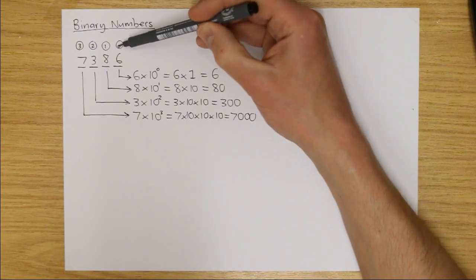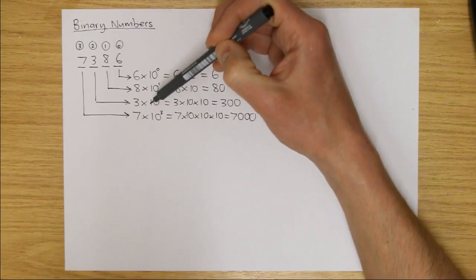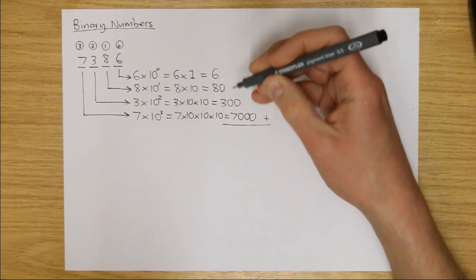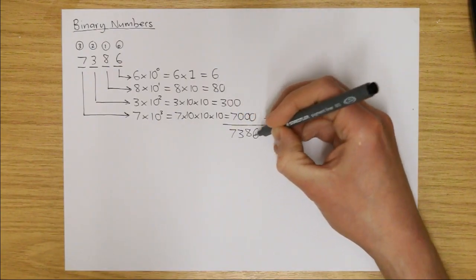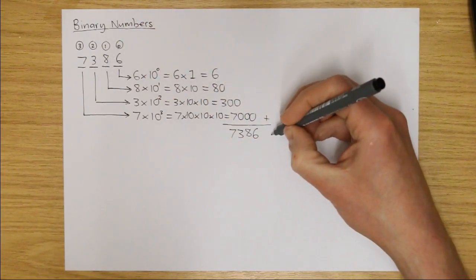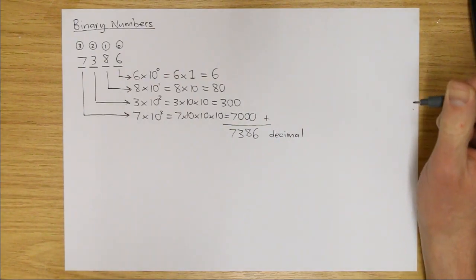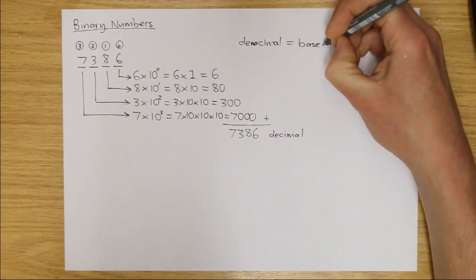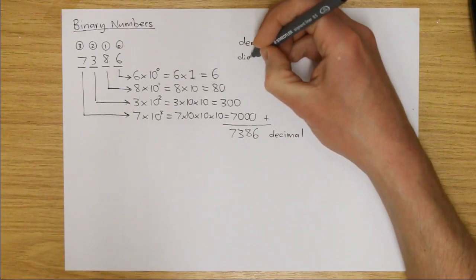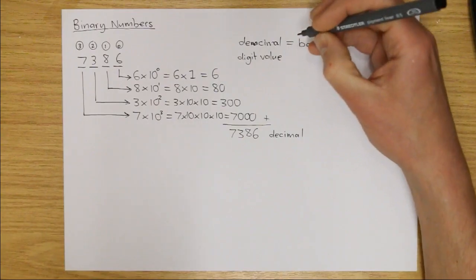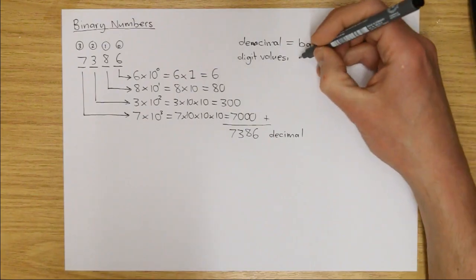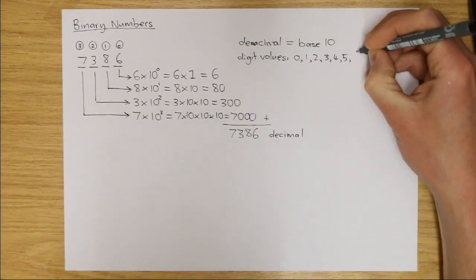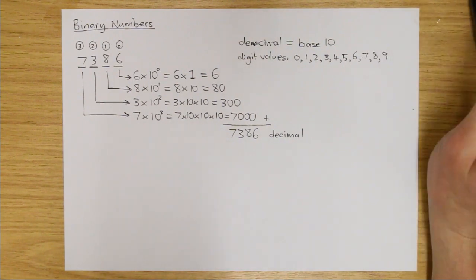Each of our digits represents a multiple of a different power of 10: digit zero is the multiple of 10 to the power of zero, digit one is the multiple of 10 to the power of one, and so on. If I add up the contributions — 7000 plus 300 plus 80 plus 6 — that gives us 7386, which is of course our original decimal number. We often refer to the decimal number system as base 10, which primarily means that the values available for each digit come from a list of 10 possibilities: 0, 1, 2, 3, 4, 5, 6, 7, 8, and 9.